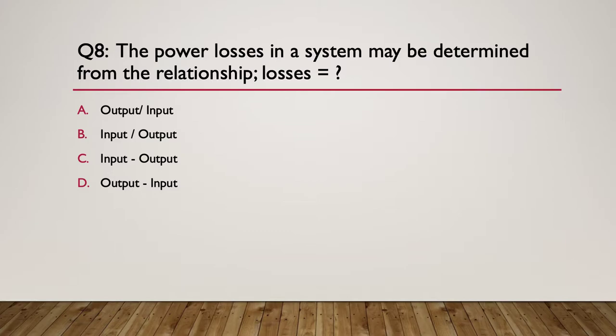Question eight. The power losses in a system may be determined from the relationship, the following relationship. Losses equal. The power losses in a system may be determined from what relationship losses equal? A, output divided by input. Input divided by output. Input subtract output, or output subtract input. Here's the hint. This is the losses, not the efficiency. We're thinking about losses, not efficiency.